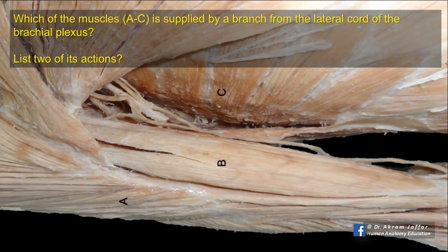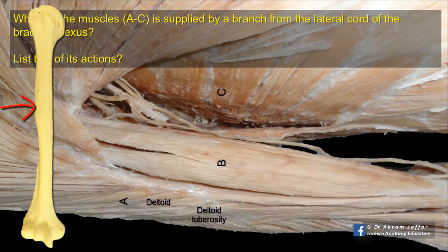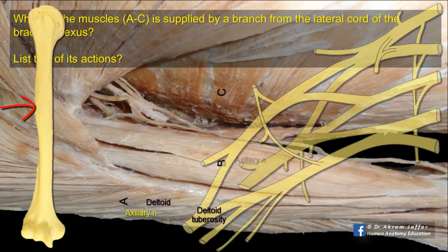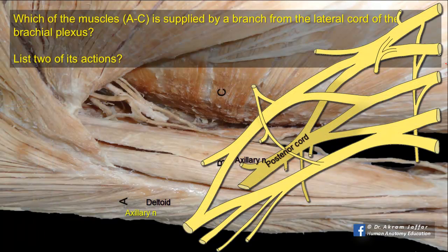Which of the muscles A to C is supplied by a branch from the lateral cord of the brachial plexus? List two of its actions. This is a close-up view showing the lateral thoracic wall and the front and lateral side of the arm. All the muscles marked are supplied by branches of the brachial plexus, but not all of them from the lateral cord. A is the deltoid muscle, inserted to the middle of the lateral aspect of the arm where the deltoid tuberosity is located. Deltoid is supplied by the axillary nerve from the posterior cord of the brachial plexus, not from the lateral cord.